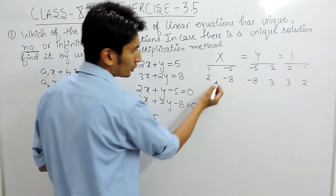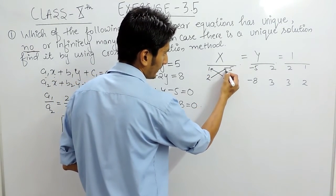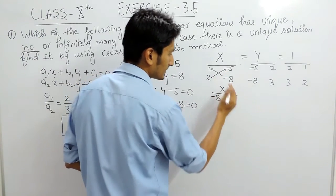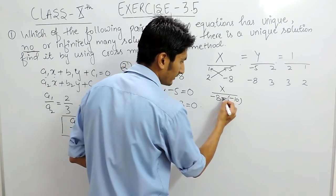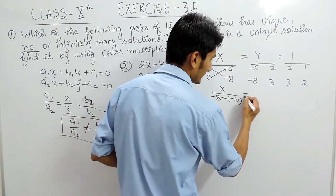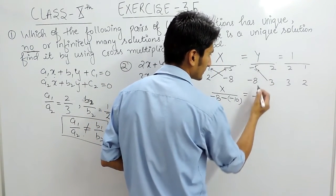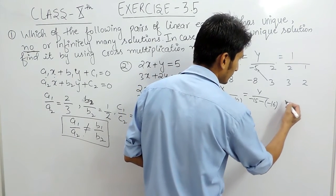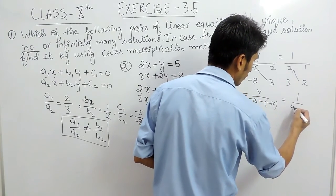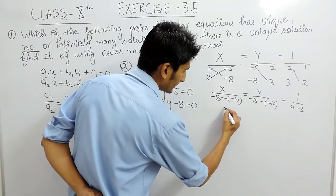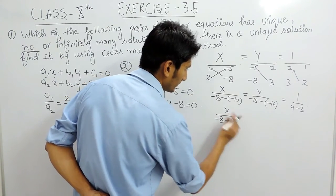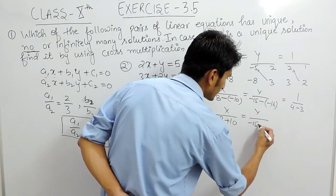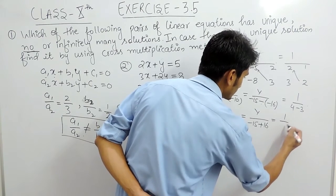Cross multiply: this multiplied by this and this multiplied by this. So x upon: minus 8 multiplied by 1 is minus 8, and minus 10; subtract these two. For y, cross multiply to get minus 15, minus minus 16. Similarly, cross multiplying gives 4 minus 3. Solving: minus 8 plus 10 equals 2, so x upon 2. For y, minus 15 plus 16 equals 1, so y upon 1. And 4 minus 3 equals 1.